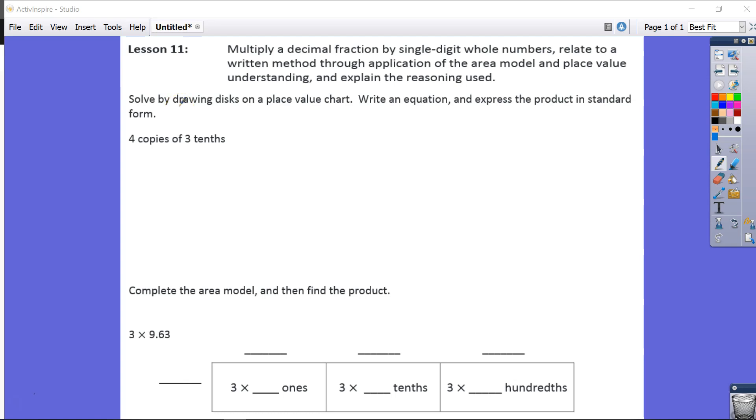Take a look at a couple of things here. The first thing they're asking us to do is draw disks on a place value chart, then we're going to write an equation, and then finally, we're going to express our product in standard form. Let's take a look at those three things here.